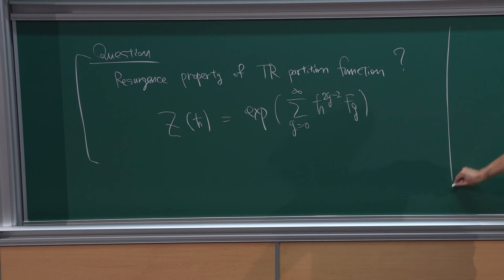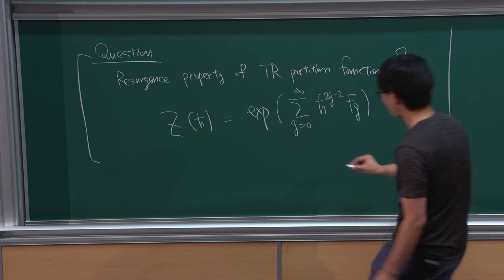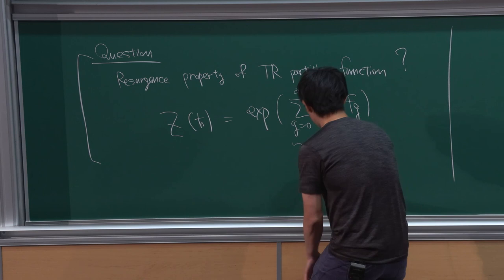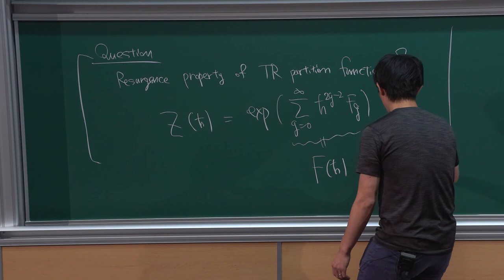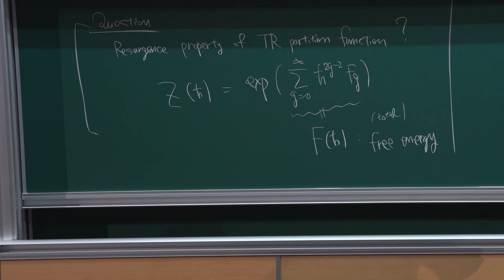Today I will show some rigorous results and some conjecture statements about the resurgence property. The exponent of the log of this partition function is also denoted by F_{h-bar} and is called the total free energy. Both of these objects are important in topological recursion — they are analogs of matrix integral partition functions and total free energies.